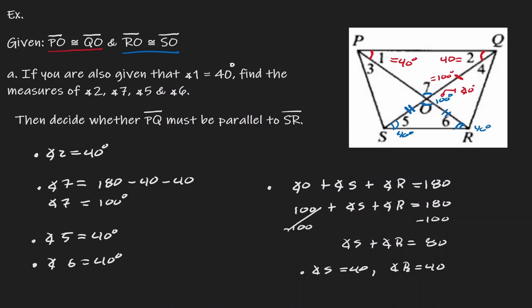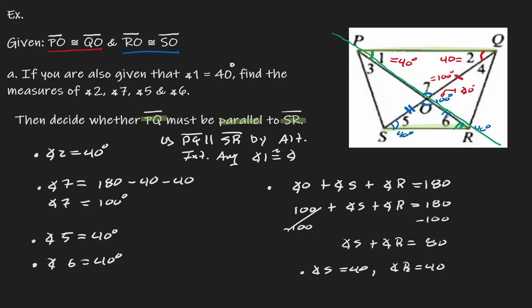The last thing we want to show is whether PQ and SR are parallel to each other. Here we have PQ and here is SR. Notice that angle 1 is 40 degrees and angle R is also 40 degrees. By alternate interior angles — thinking of the connecting line as a transversal — PQ and SR are parallel to each other. So PQ is parallel to SR by alternate interior angles, specifically because angle 1 and angle 6 are congruent to each other.